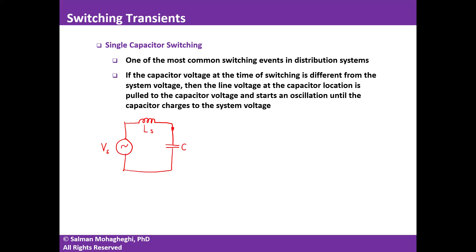As we have seen before, the moment I close a switch to connect the capacitor to the rest of the system, I will have an oscillation. The voltage of the capacitor follows the form: V minus the difference between the system voltage at the moment of switching and the initial voltage of the capacitor, times cosine of ω₀t, where ω₀ = 1 / √(L_S · C). These events are high frequency enough that we can assume the system voltage remains constant during the transient.